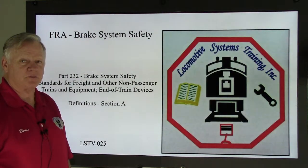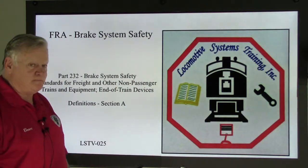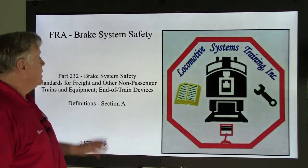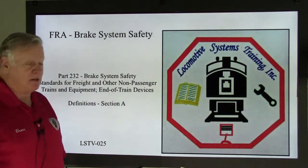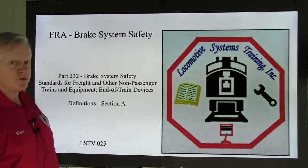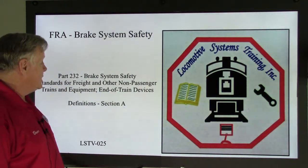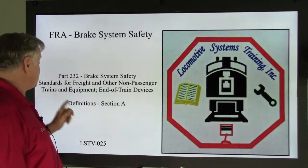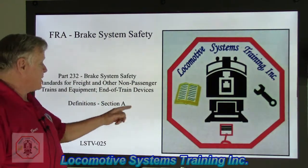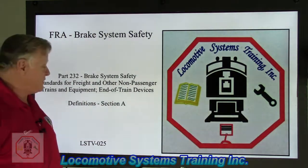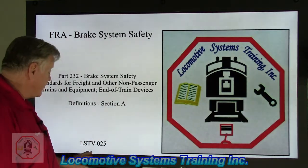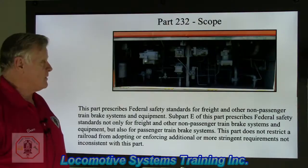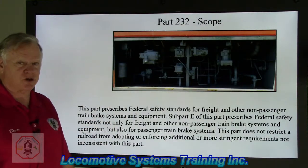Good afternoon and welcome back to locomotive systems training. We're going to a whole different area here for the FRA rules — we're going to FRA brake system safety. That's a whole new section, Part 232 of the FRA rule book. The name is rather lengthy: Brake System Safety Standards for Freight and Other Non-Passenger Trains and Equipment, and End of Train Devices. This is LSTV-025.